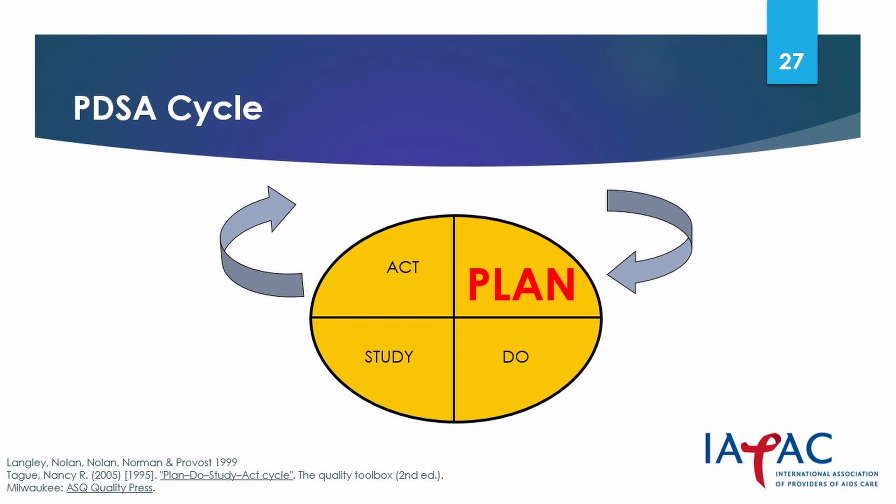The planning phase establishes the objectives and processes required to deliver the desired results. It includes four steps: write a problem statement; describe what you want to accomplish in an aim statement; try to answer three fundamental questions — what are we trying to accomplish, how will we know that a change is an improvement, and what change can we make that will result in improvement; thirdly, identify the root cause of the problem; and fourthly, develop an action plan including necessary staff, resources and a timeline.